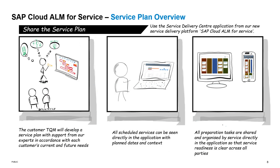The first thing that you would see is a service plan overview. The customer's TQM will develop a service plan with support from the SAP experts in accordance with the customer's current as well as future needs. Those service plans will be shared in the service delivery platform, so all the scheduled services can be seen directly in the application with the plan dates and the context for each service. Along with the service plans, you would also be able to see all the preparation tasks that are shared for those particular services, done for service readiness so that everything is set before the service starts.